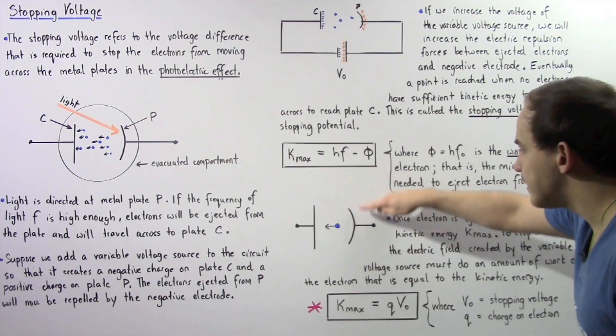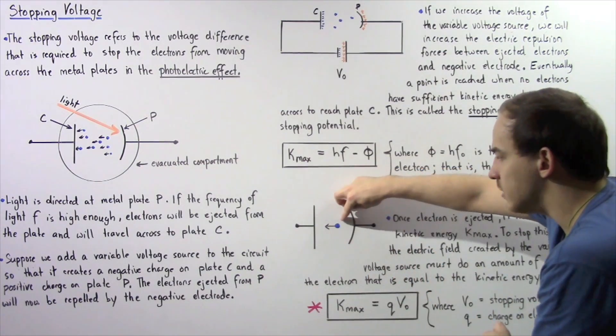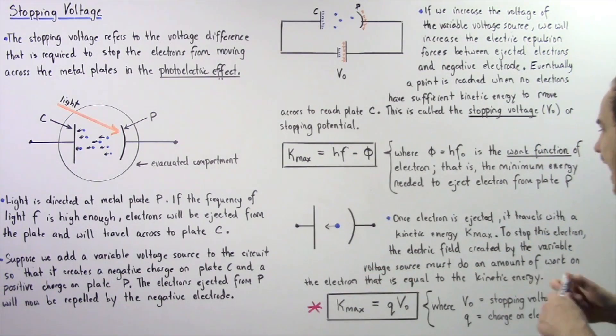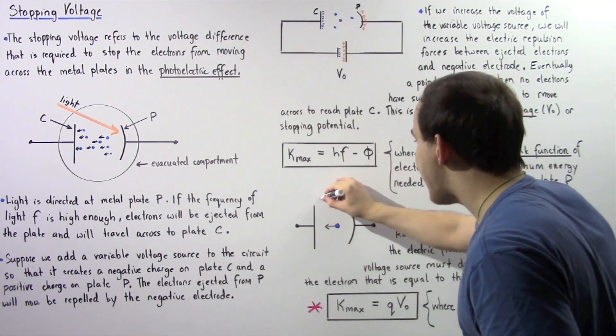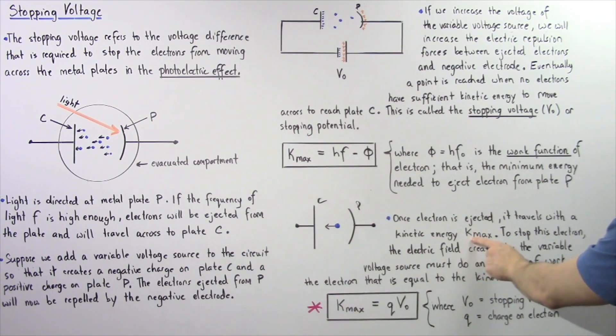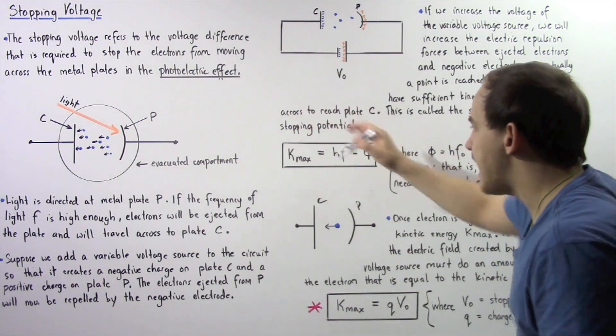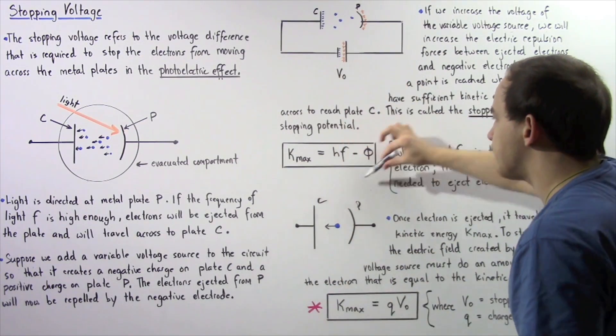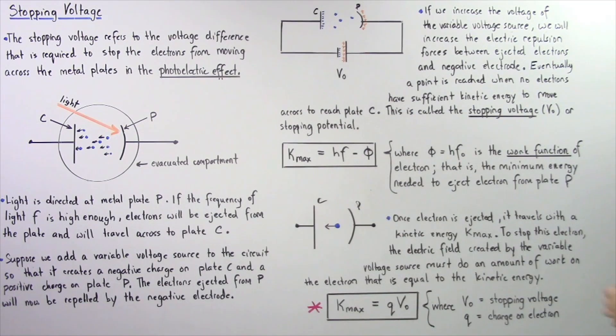So basically, let's look at the following diagram. We have an electron that is ejected from plate P, and it travels across to plate C, and it carries a certain quantity of kinetic energy given by Kmax. So, Kmax, the energy the photon has, is equal to the difference of these two quantities.